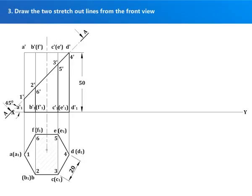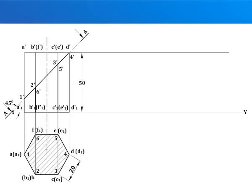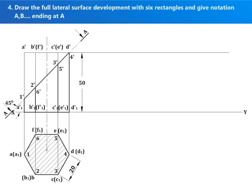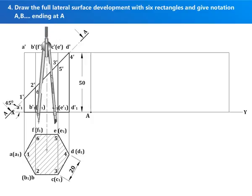Draw the two stretch-out lines from the front view. Draw the full lateral surface development with six rectangles and give notations A, B ending at A.